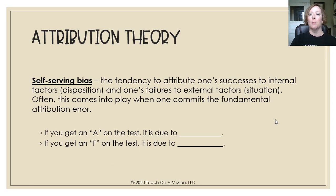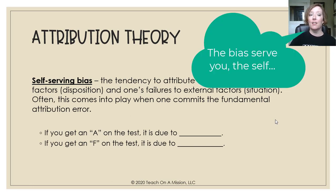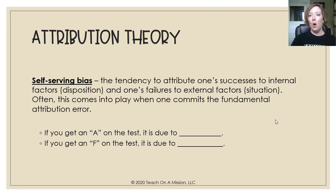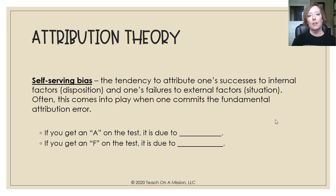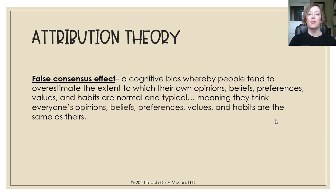Often this comes into play when one commits the fundamental attribution error. Using the self-serving bias: if you get an A on the test, it's due to something internal — 'I'm just super smart.' If you get an F on the test, it's due to some type of situational or external factors — 'I was really distracted,' 'I didn't get good sleep,' 'She skipped that in the videos.'